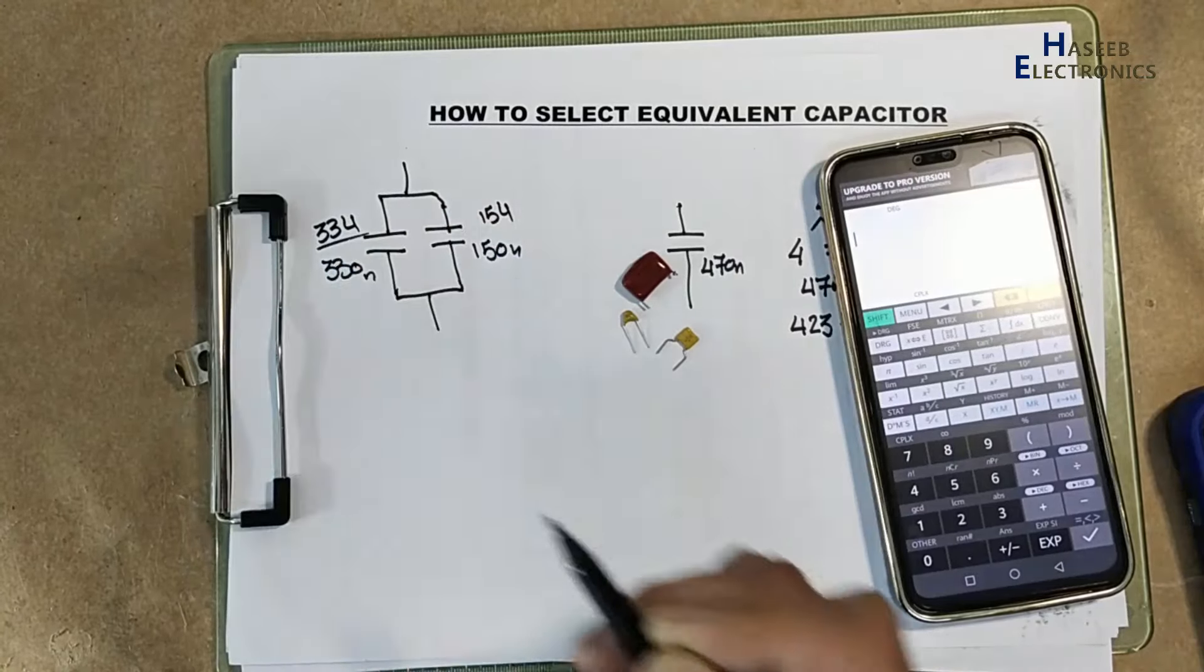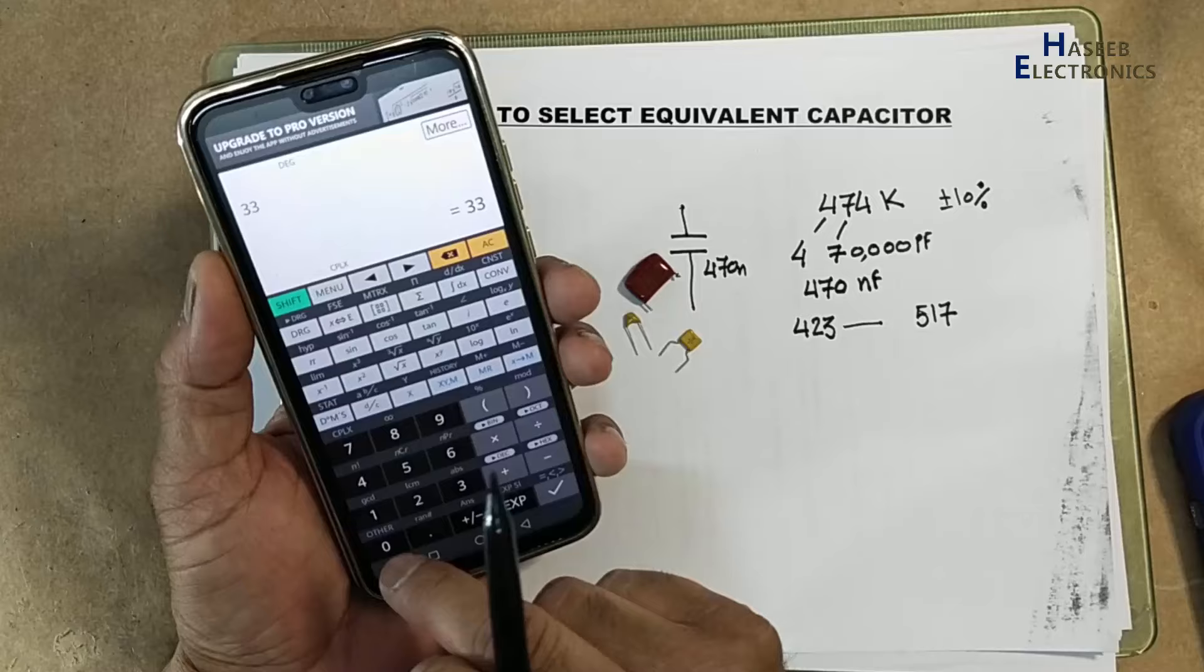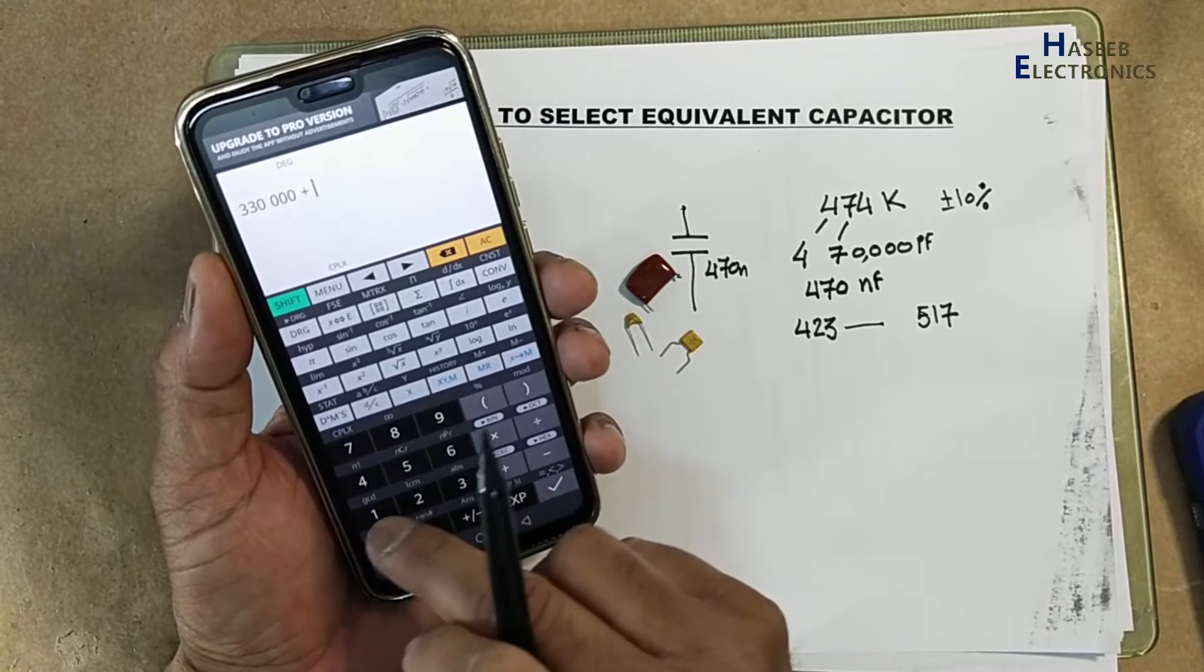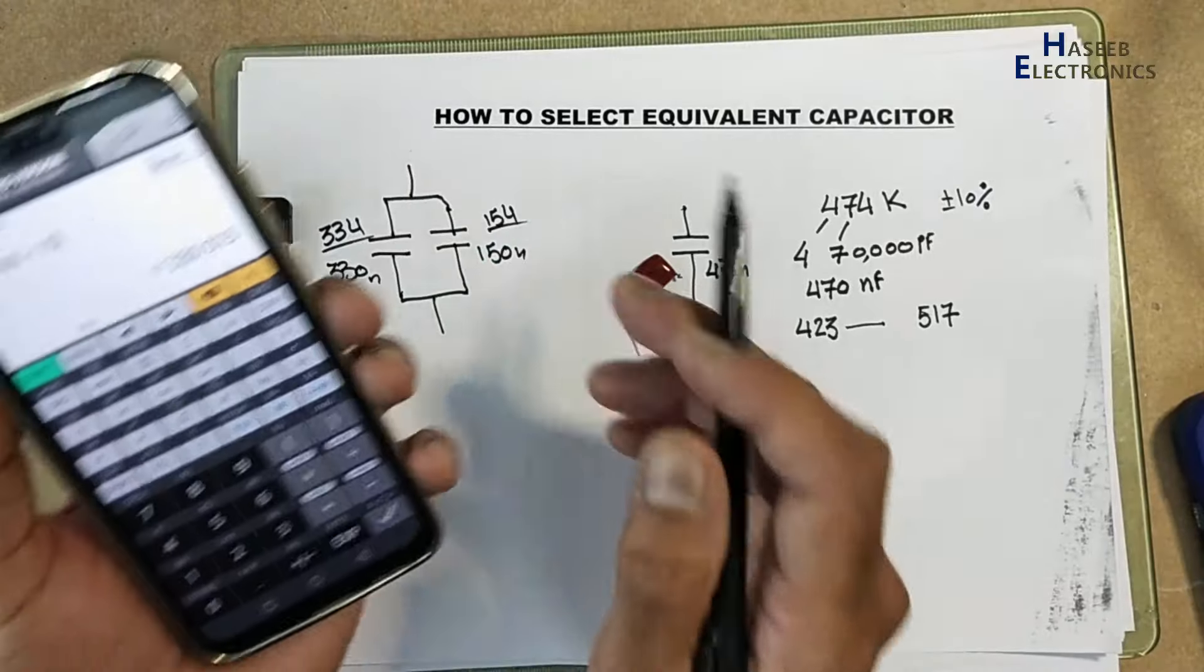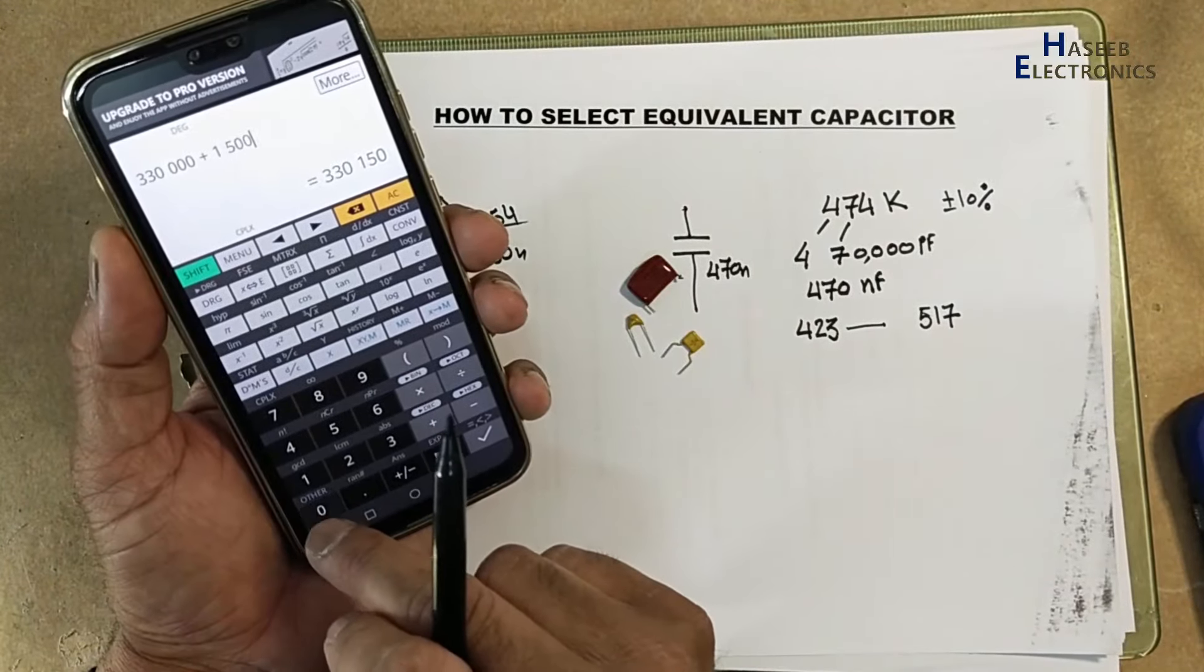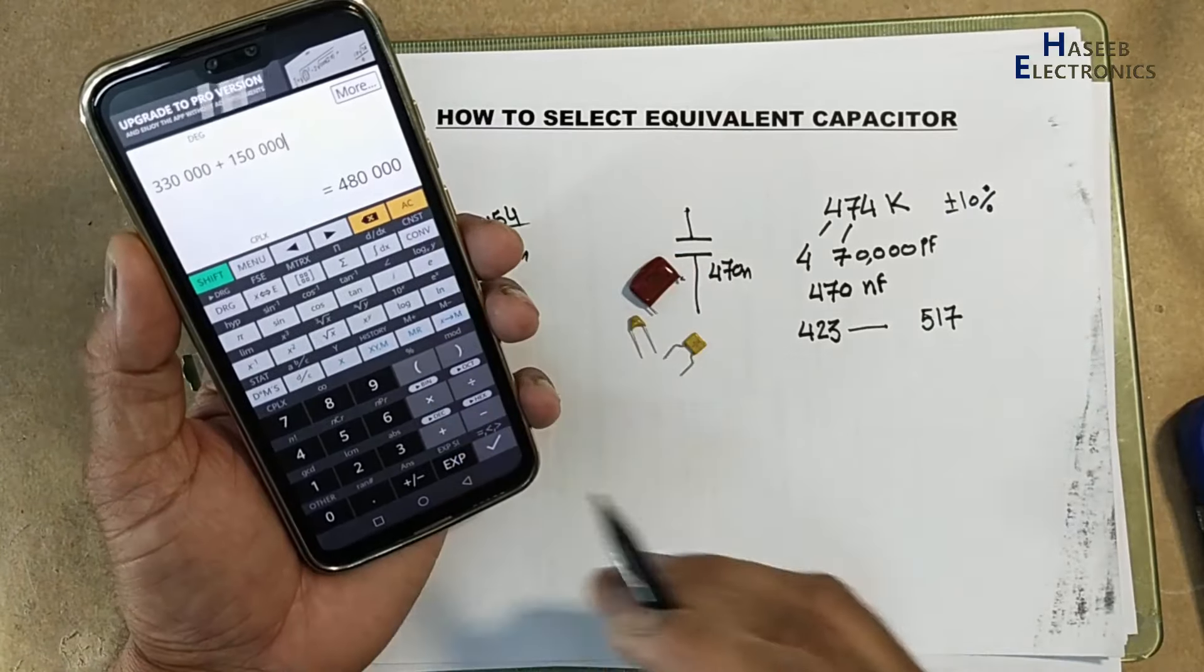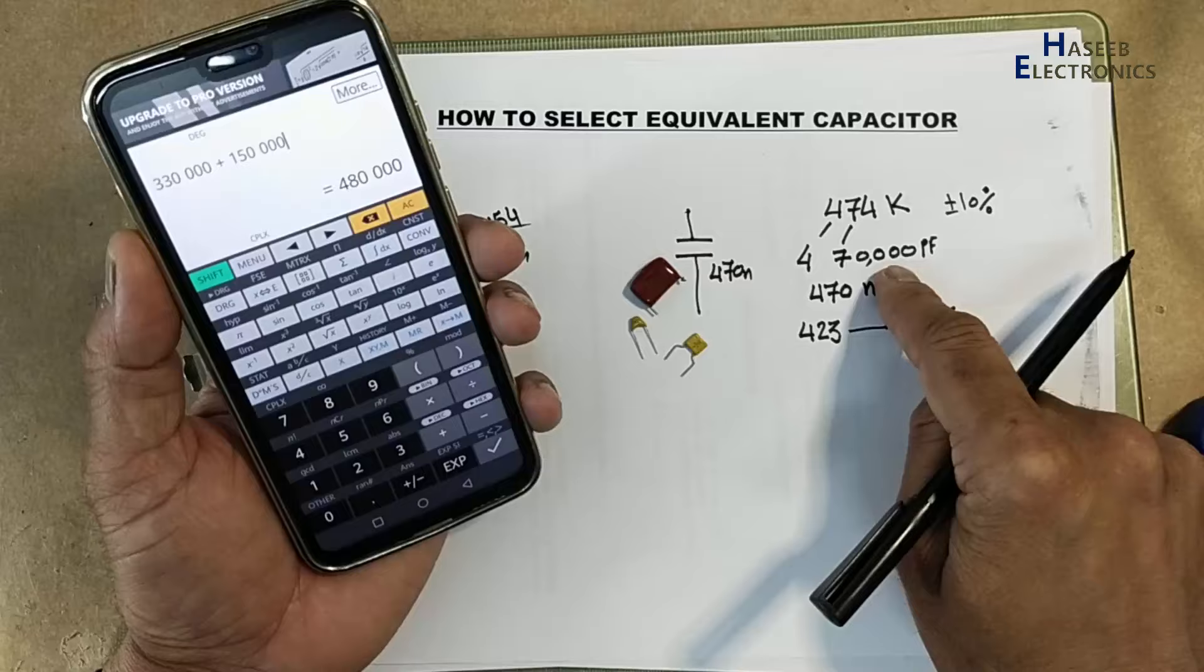334 PF code. 33, four zeros. One, two, three, four. Plus 15, four zeros. One, two, three, four. Plus 15, four zeros. One, two, three, four. 480. That is very close to 470.